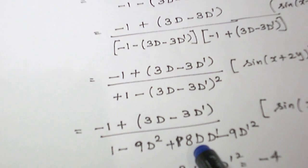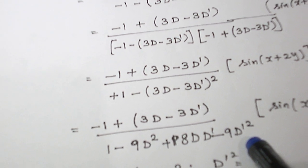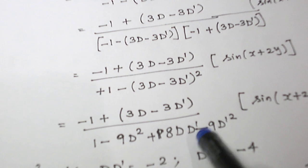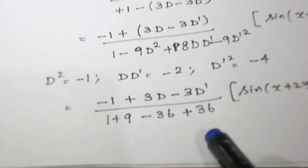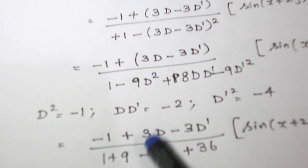9d square, 18d d dash, 9d dash square. For d square, d d dash, d dash square. Let us substitute the previous values and that comes as 10 in the denominator.